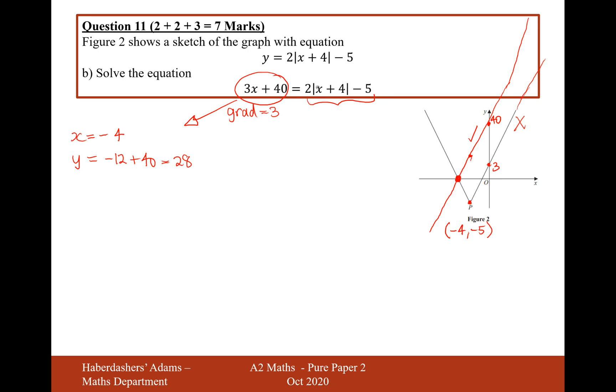It's going to intersect the negative part of this x plus 4 when it's been modulused. So it's going to be the negative of this component here. So I'm now going to be solving 3x plus 40 equals 2 times the negative component of the x plus 4. So that would be minus x and minus 4 minus 5. And then if I expand my brackets and solve it, this will be our only solution.